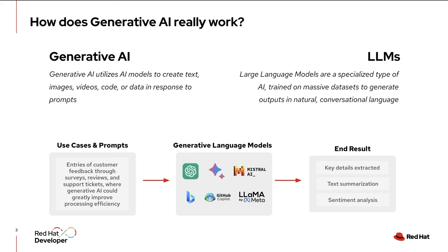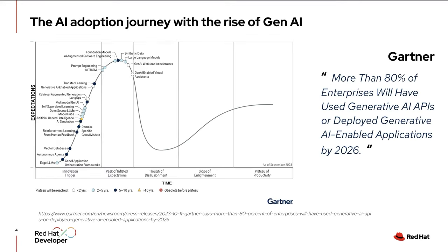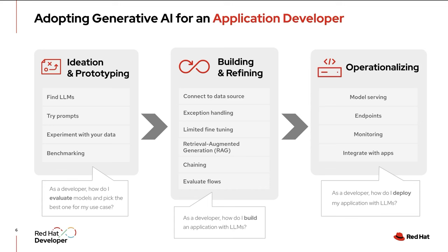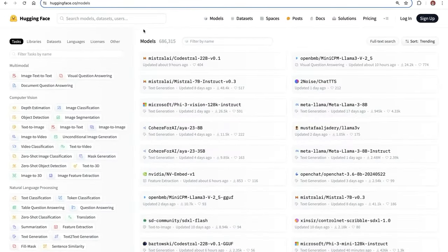I want to talk about how over 80% of enterprises are going to have some type of generative AI infused in their applications by 2026. I want to break down what it means for an application developer to start adopting generative AI. Today I'll focus on three things: firstly, the ideation and prototyping of working with LLMs, finding them from repositories such as Hugging Face, trying out different prompts, and figuring out what kind of model you need — large or small, chat or instruct, text-to-image or audio.